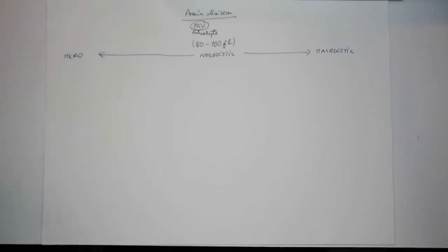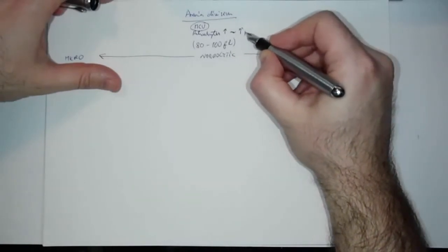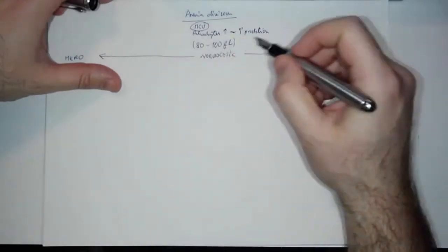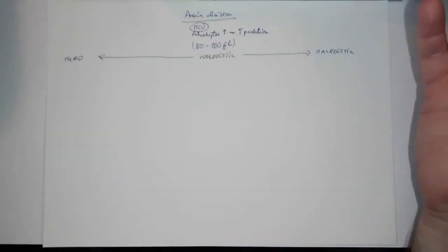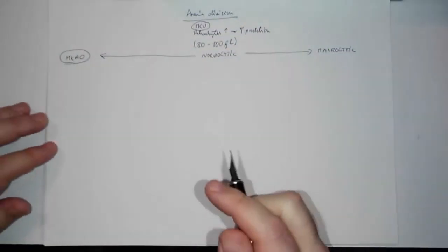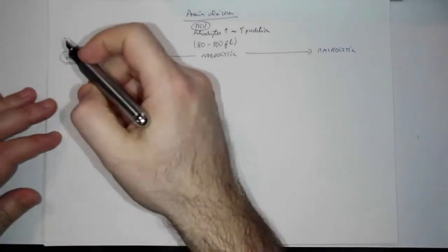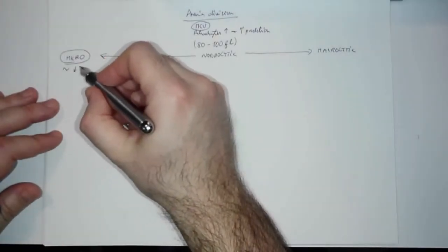In cases of decreased production, the percentage of reticulocytes in the peripheral blood will be decreased. In contrast, if there is increased hemolysis or destruction and production is intact, the bone marrow will respond with increased production and the percentage of reticulocytes will increase. So if reticulocytes are increased, it means increased production; if decreased, it means decreased production.